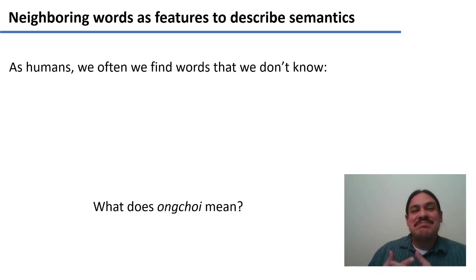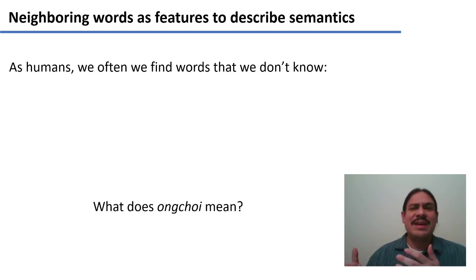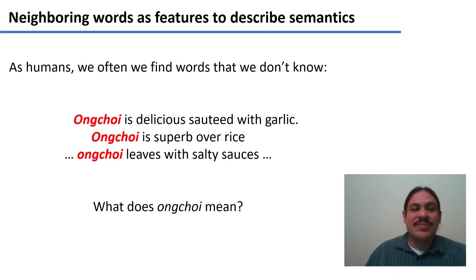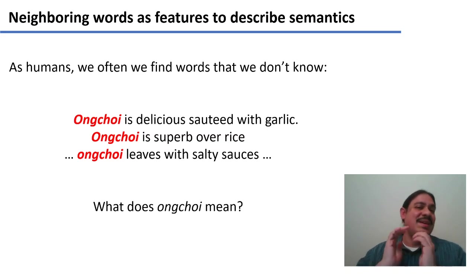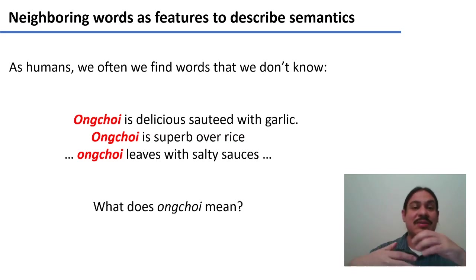Let's talk about meaning. Sometimes as humans, we find words that we don't understand, that we've never seen before, and we have to try to guess what they could possibly mean. For example, Ong Choy. What does the word Ong Choy mean? If you've never heard it before, you probably wouldn't have a clue. But what if I give you the word Ong Choy in context, with sentences like: Ong Choy is delicious sautéed with garlic, or Ong Choy is superb over rice, or Ong Choy leaves with salty sauces. Maybe you won't know exactly, but you might have an idea — maybe it's some kind of food, some kind of leaf, something you eat warm because you have to sauté it.